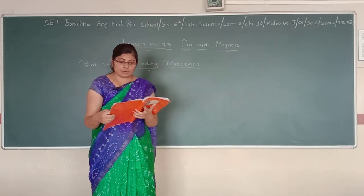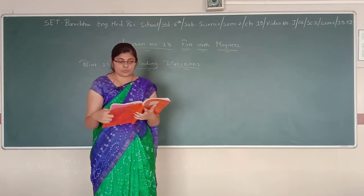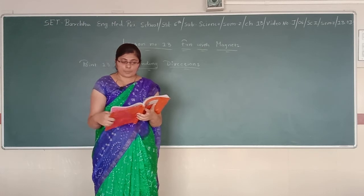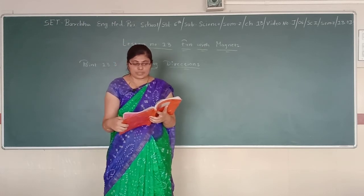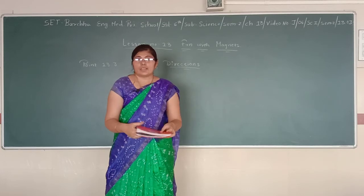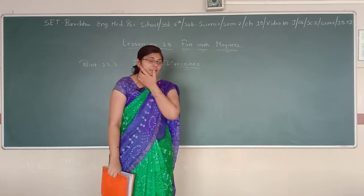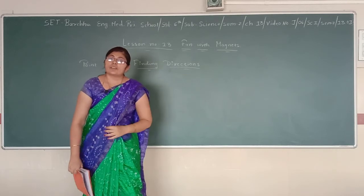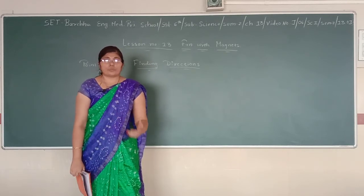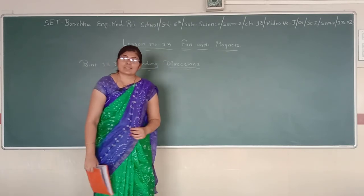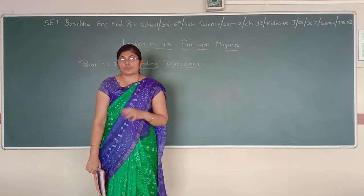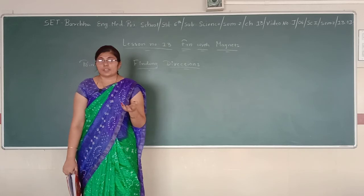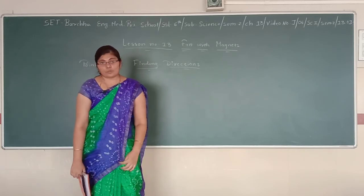The compass is then rotated until the north and south marked on the dial align with the two ends of the needle. The north pole of the magnetic needle is usually painted in a different color. From this you learn that to find directions, the sun, the compass, and other measures are very useful. This concludes lesson 13.3.